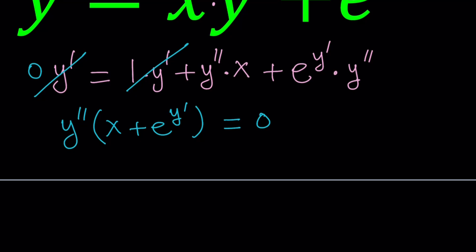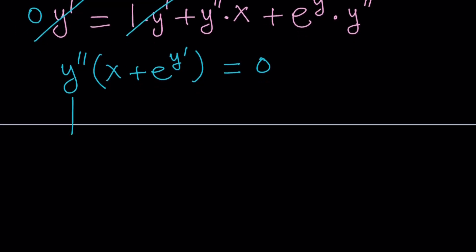Okay. This product equals zero. So this gives us two results. Either this one is zero or the other one. So y double prime equals zero. Let's start with that one because that one is a little easier.